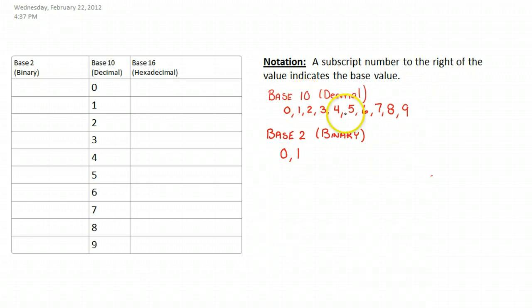Notice that base 10 has 10 values, and the final value is 1 less than the base. Base 2 has two values, so we have 0, 1. 1 is less than 2.